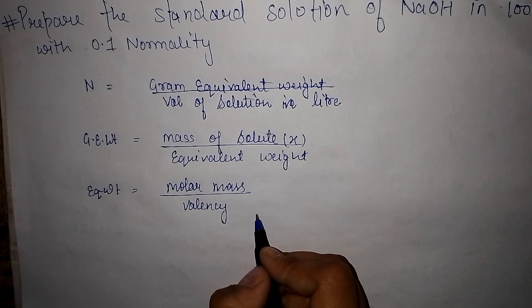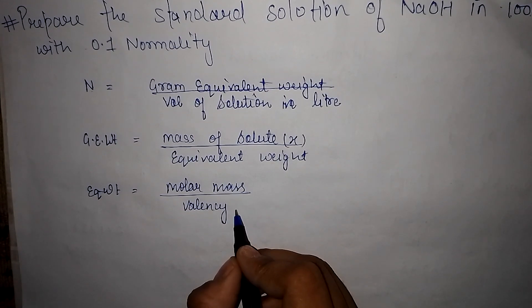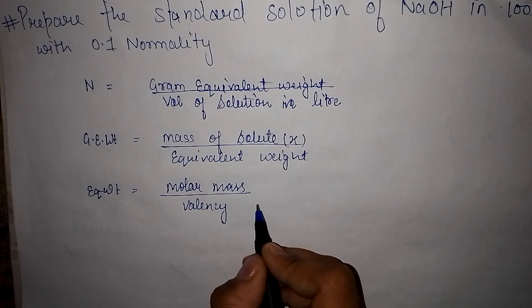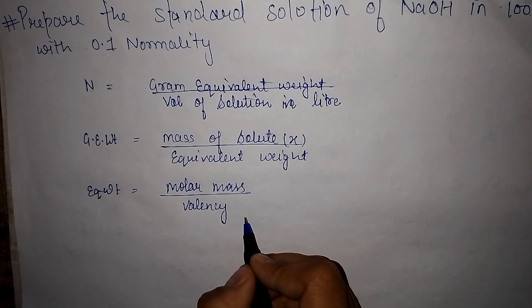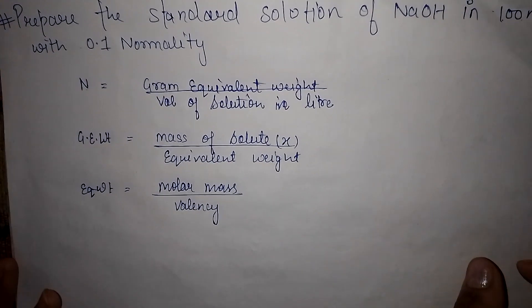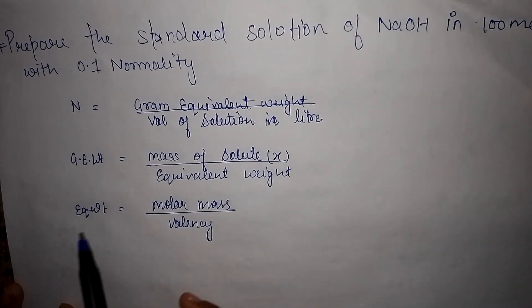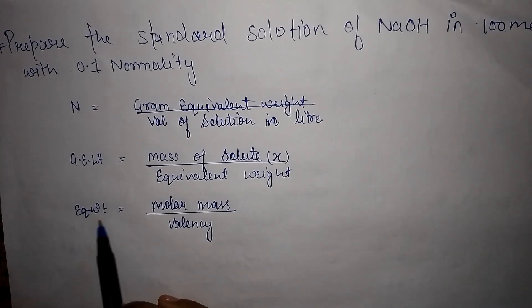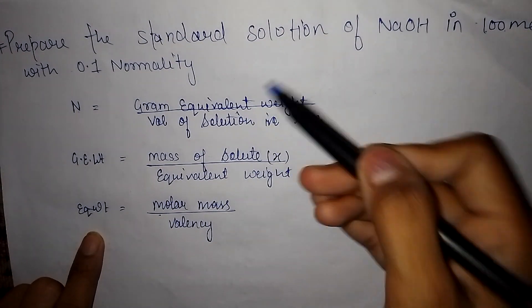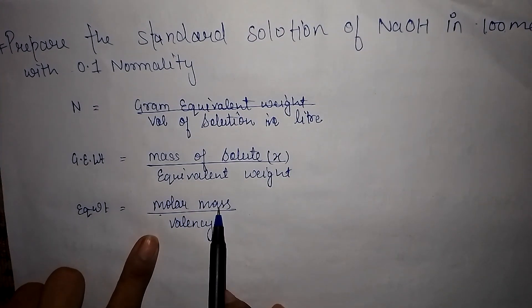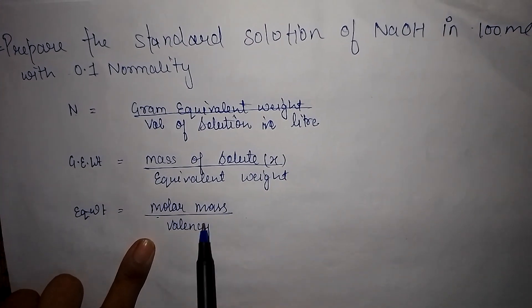Valency for an acid means the number of H⁺ protons released, and for a base it means the number of OH⁻ ions released. So you simply calculate how many H⁺ or OH⁻ will be released by the acid or base. Now let's calculate the equivalent weight.